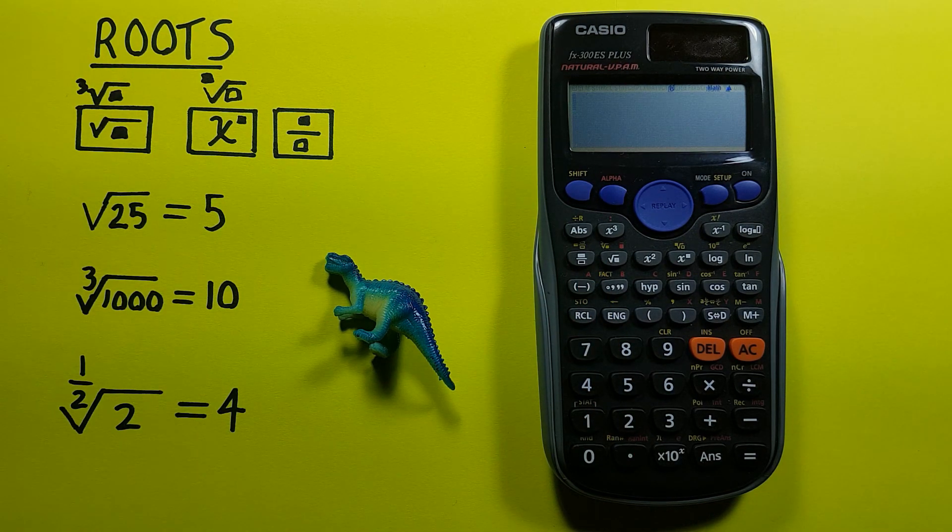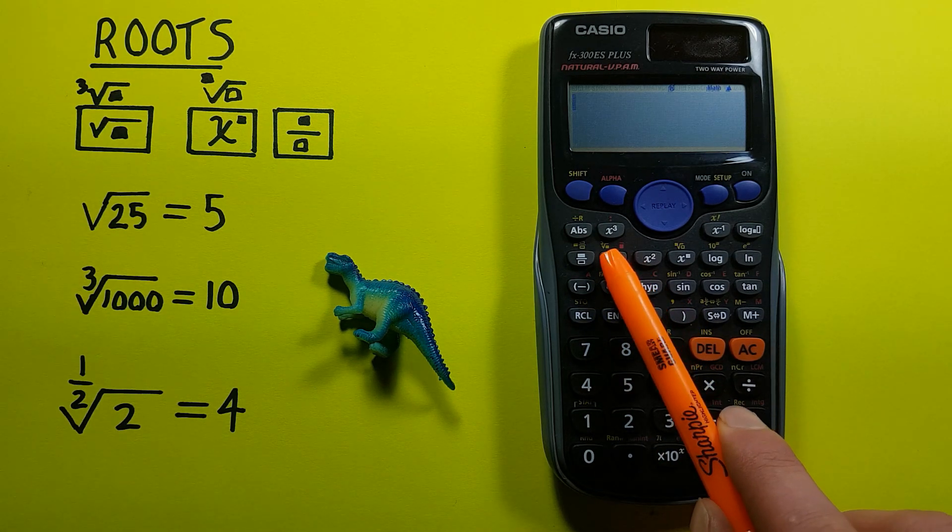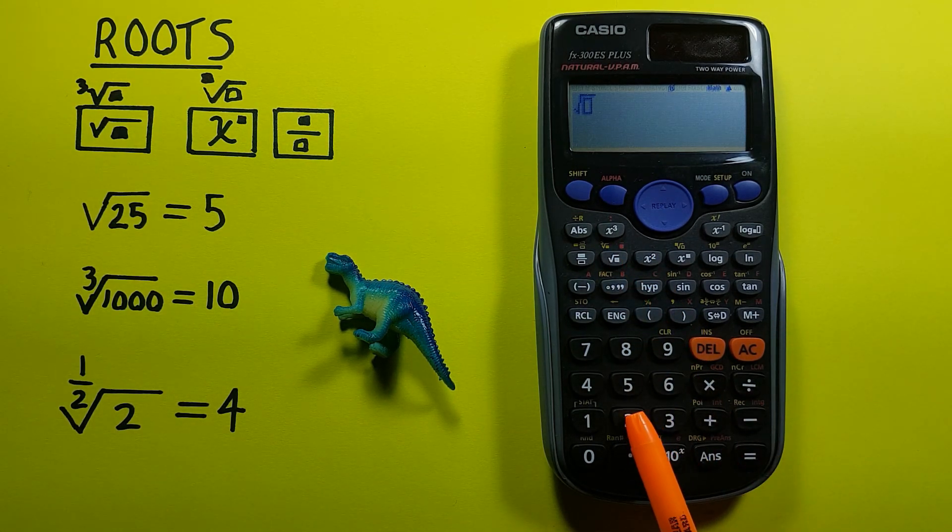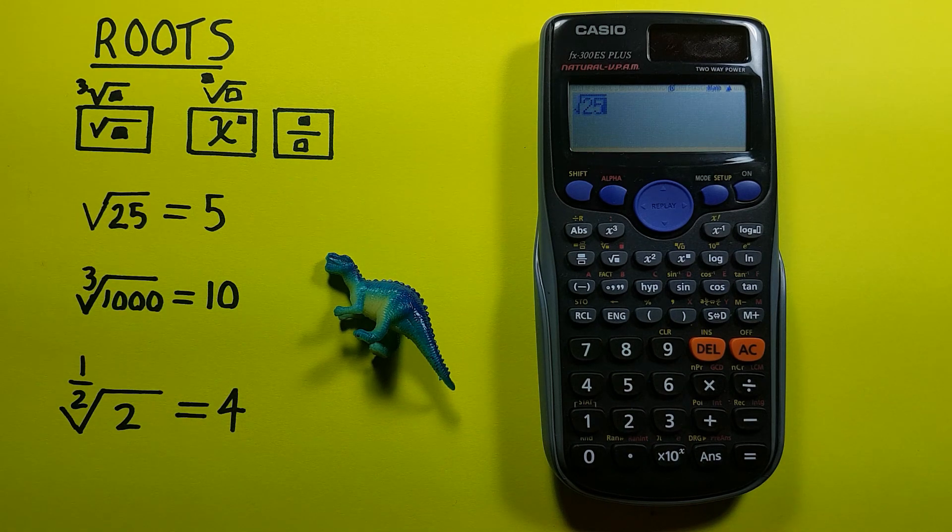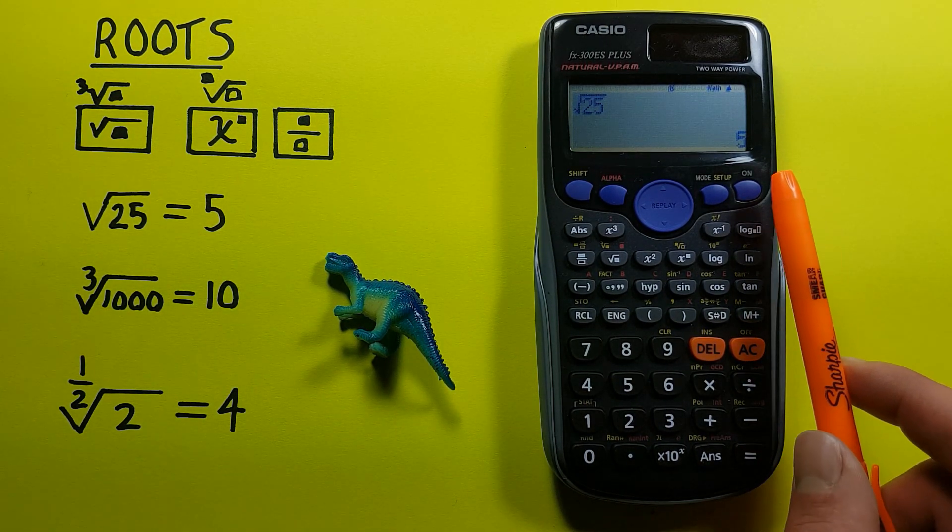All right, so to get started, if we just want to square root a number, you press the square root key and then enter the number. So to square root 25, we enter it like that and press equals and we get a result of 5.